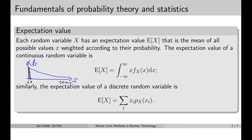If we know the probability density function of the random variable, then we can easily calculate the expectation value according to this formula. We basically integrate over the values of the random variable and we use the probability density function as the weighting factor. So in our example, the shorter distances will have bigger weight than the longer distances when calculating the expectation value.